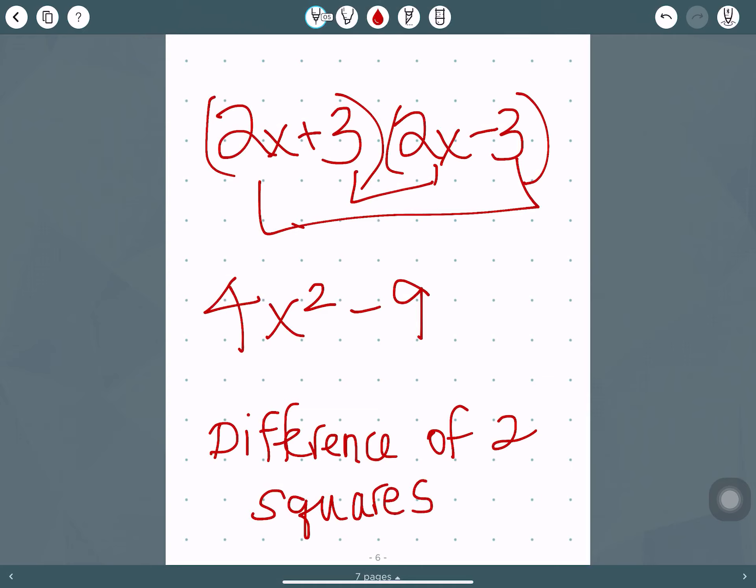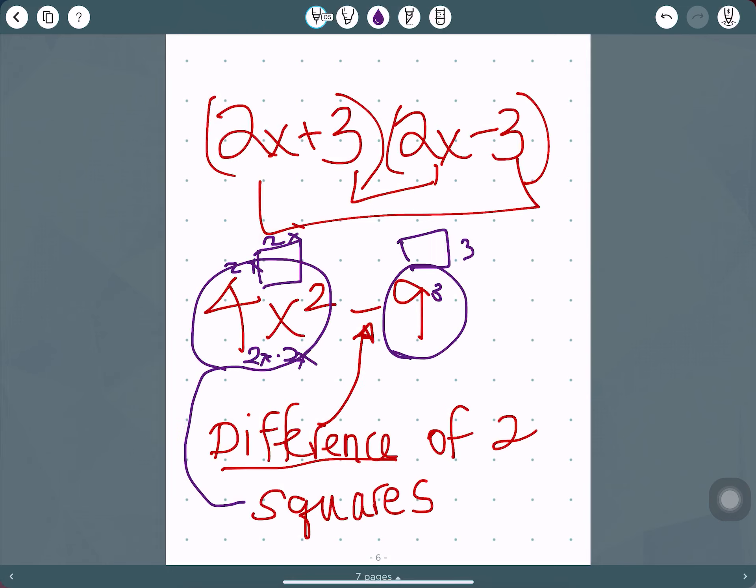Because the two terms, difference means subtract, and then we have two squares. So those are a perfect square. A square has two sides that are the same. So this would be 2x times 2x, and this would be 3 times 3. So 4x squared is a perfect square, and 9 is a perfect square.